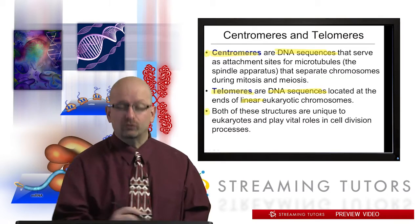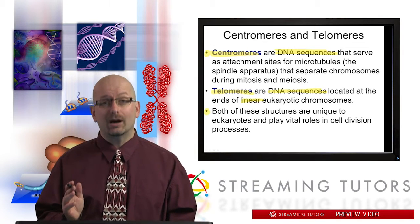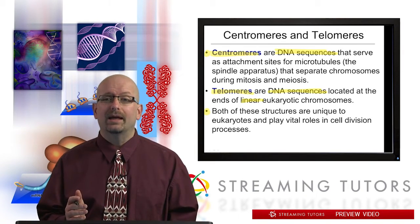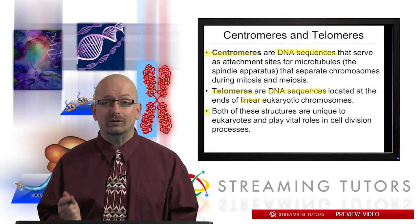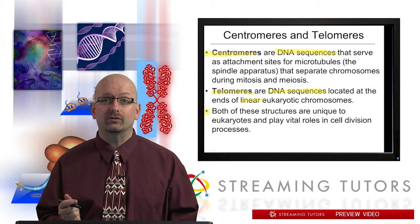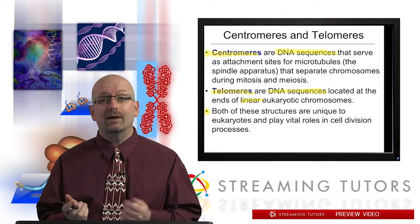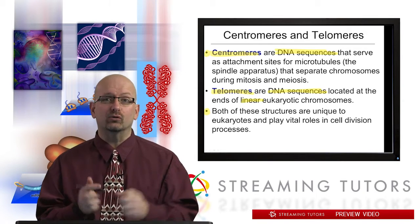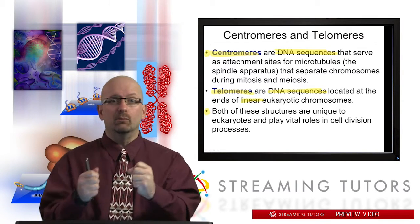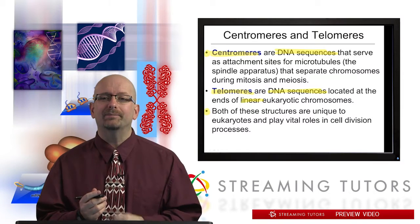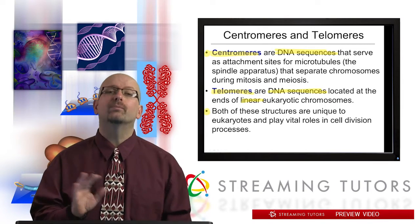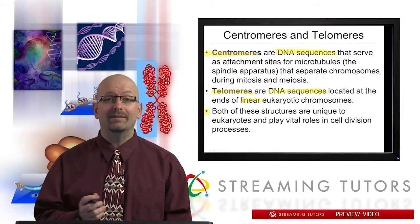Both these structures are completely unique to eukaryotes. They're not present in bacteria, and they play vital roles in cell division processes. Bacteria have one chromosome, so there's not going to be a lot of highly orchestrated movement of chromosomes going on. And since their chromosomes are circular, they don't have any need for telomeres.